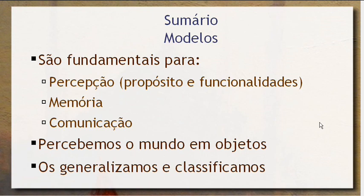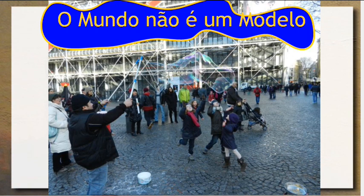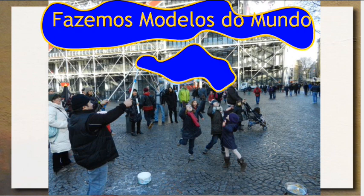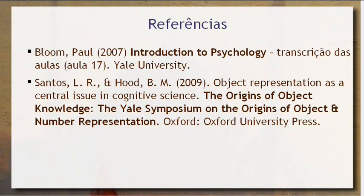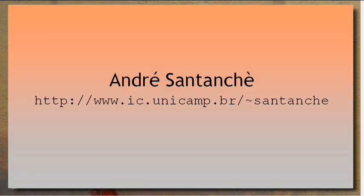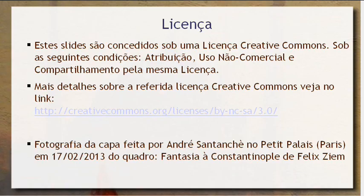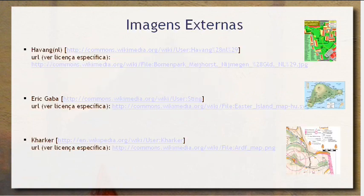Mais para frente ainda, a gente vai ver como os modelos vão ser operados por máquinas — como as máquinas vão interpretar modelos como nós fazemos e vão fazer coisas com esses modelos. Uma conclusão final, importante para você lembrar no final dessa aula, é que o mundo não é um modelo. Nós é que fazemos modelos do mundo. Meu nome é André Santanché, eu sou da Unicamp. Aqui estão algumas referências usadas neste vídeo, o meu site, caso você queira mais informações e outros vídeos como esse.